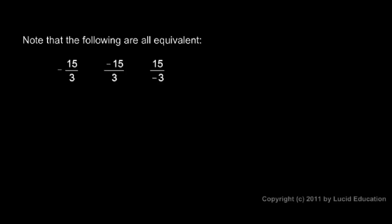Note that all of these are equivalent. We could have negative fifteen-thirds, or negative fifteen over three, or fifteen over negative three. In all three cases we have a single negative sign, and that gets applied to our answer. All of these are the same and they're all equal to negative five.